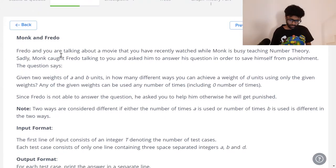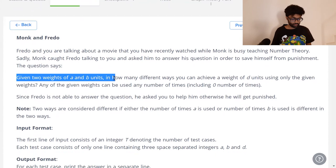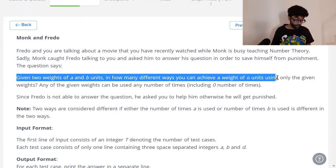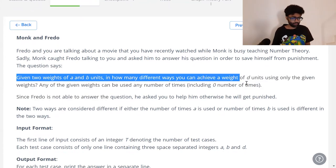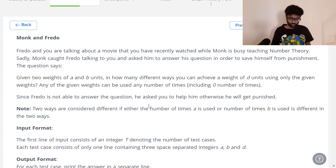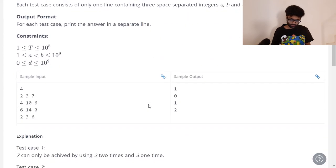So let's have a look at this problem and see if we can't solve it. Monk and Fredo. This is all filler right here. The problem really starts from this pattern. You're given two weights of a and b units. In how many different ways can you achieve a weight of d units using only the given weights? Any of the given weights can be used any number of times. So let's have a look at the test cases.